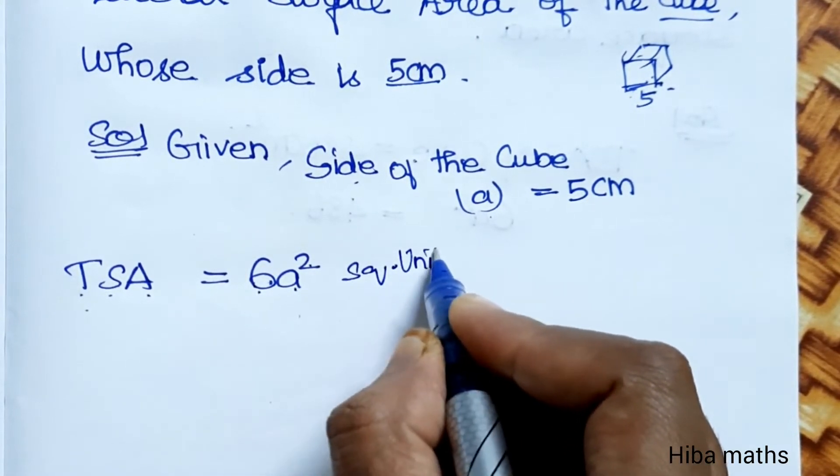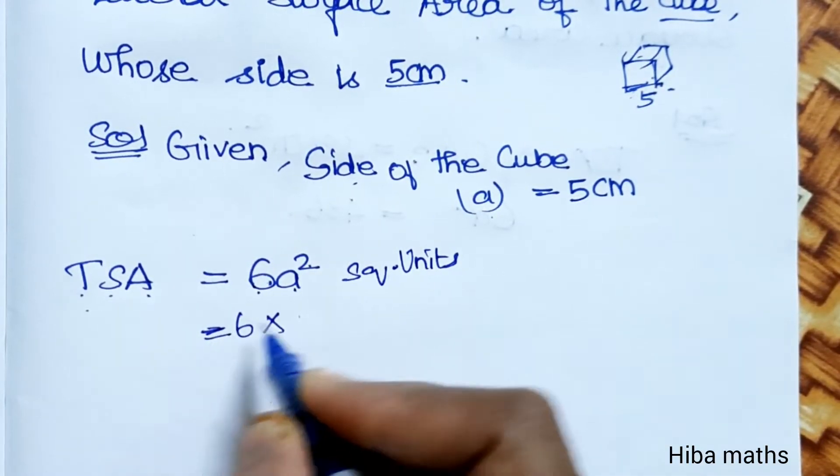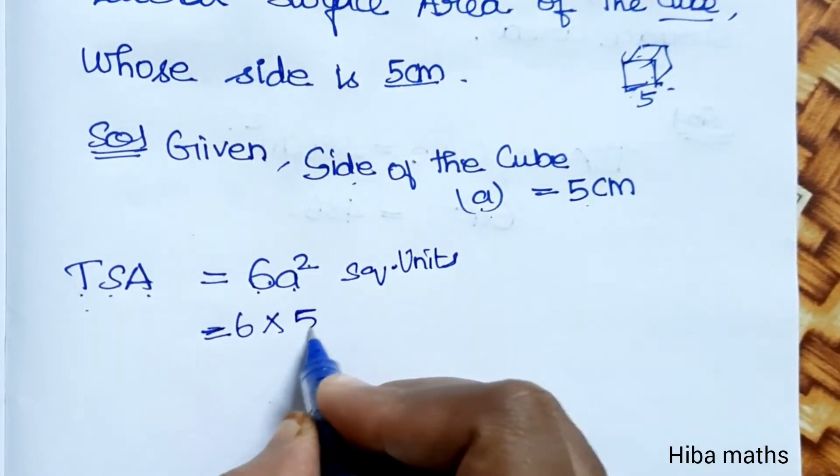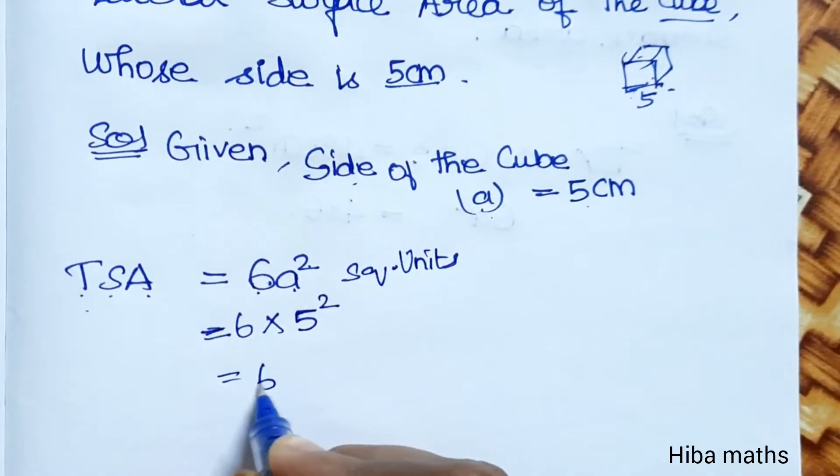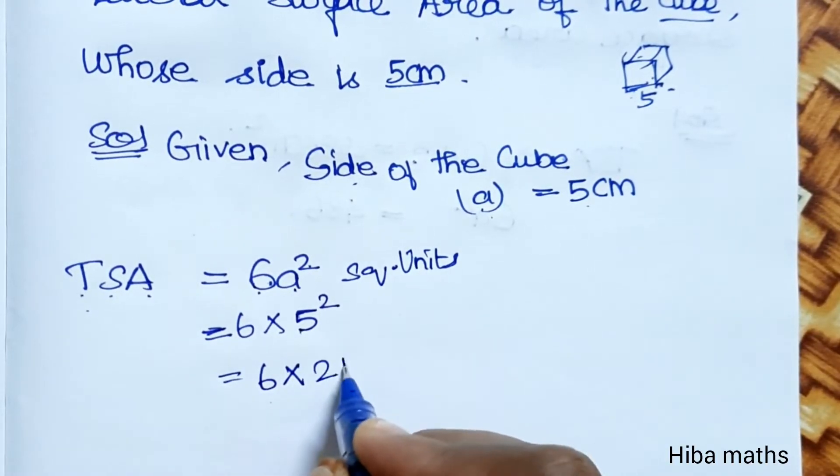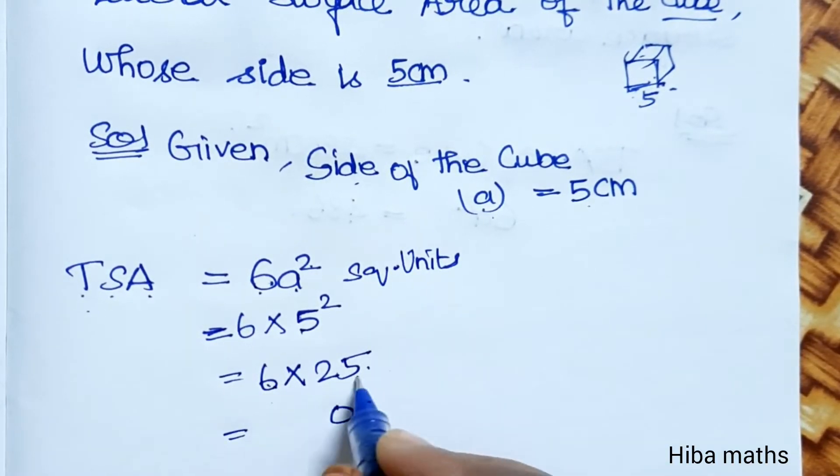TSA = 6 × 5². 5 squared is 25, so 6 × 25 = 150. Therefore TSA = 150 cm².